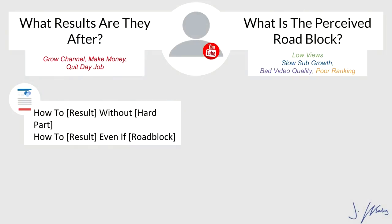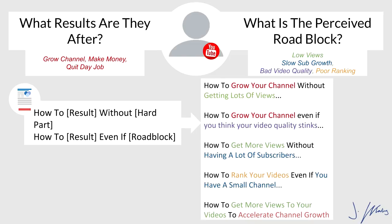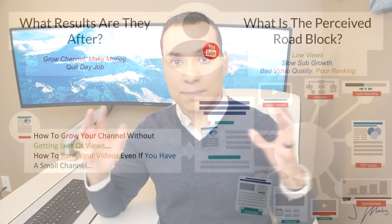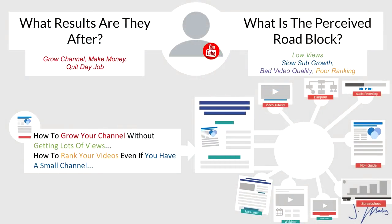Now take those results and roadblocks and plug them into a copywriting formula. The two formulas are: 'How to [result] without [hard part]' and 'How to [result] even if [roadblock].' For example: 'How to grow your channel without getting lots of views,' or 'How to get more views without having a lot of subscribers.' You're just swapping out different results, roadblocks, and problems. Come up with as many as possible, then choose two to move forward with for your first split test — in this example, 'How to grow your channel without getting lots of views' and 'How to rank videos even if you have a small channel.'